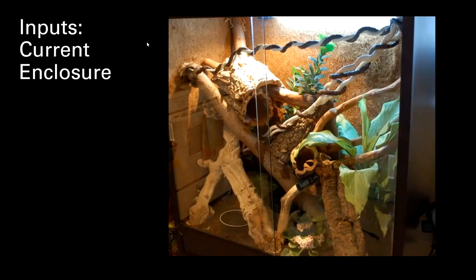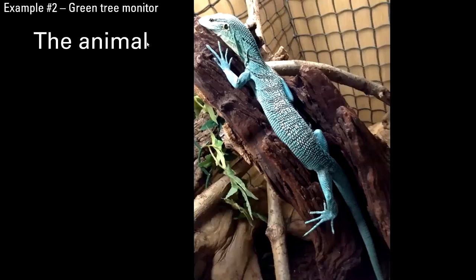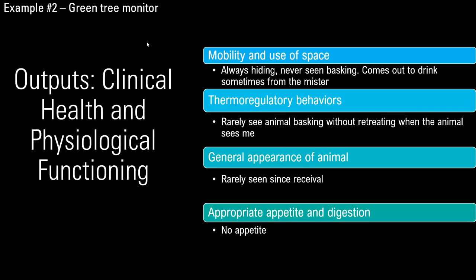The enclosure has a basking spot with the ability to thermoregulate by moving around, live plants, and good humidity. This is an example where you would be prepared for this animal but are still running into some health and welfare concerns. The animal looks like a lean female — healthy looking as far as we can tell — but extremely skittish.